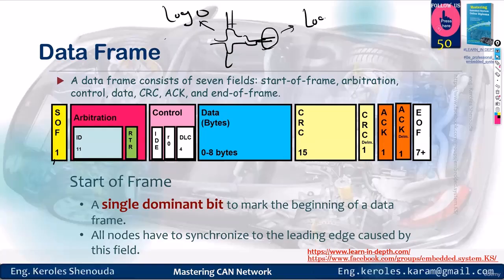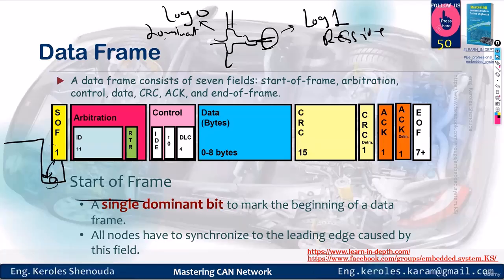Now, for the start of frame, if the bus was in an idle state represented by 1 and suddenly drops to 0, this indicates the start of frame. This logic 0 is interpreted as what? But it's a single dominant bit, because the dominant is what creates this pattern. This appearance emerges after the logic enters the transceiver. Stay with me. This single dominant bit marks the beginning of the data.